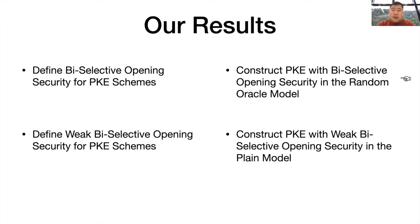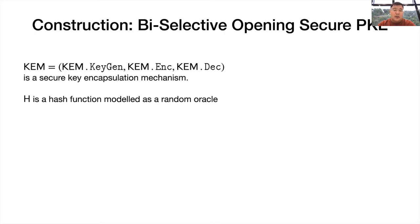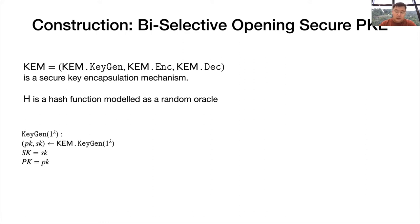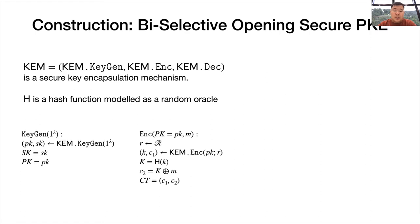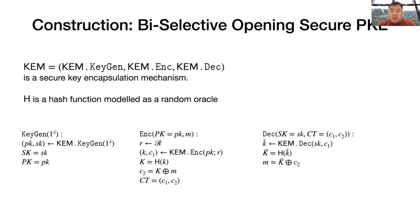So next we will see how to construct PKE schemes with biased-selective opening security. The construction is built on a secure key encapsulation mechanism (KEM) and a hash function modeled as a random oracle. The public key and secret key of the PKE scheme is just the public key and secret key of the KEM scheme. To encrypt the message, the encryption algorithm first runs the encapsulation algorithm of the KEM scheme, and then uses the hash of the encapsulated key to mask the message. To decrypt the ciphertext, the decryption algorithm first runs the decapsulation algorithm of the KEM scheme, and then uses the hash of the recovered key to unmask the message.